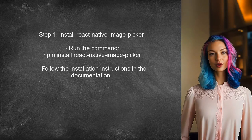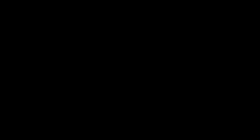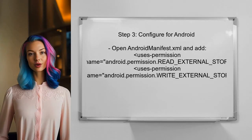To send text messages with image attachments in React Native, start by installing the React Native Image Picker Library, which allows the user to select images from their device. Next, configure the library for both iOS and Android. For iOS, ensure the necessary permissions are added to the info.plist file. For Android, check the androidmanifest.xml file to ensure the correct permissions are included for accessing the device's storage.